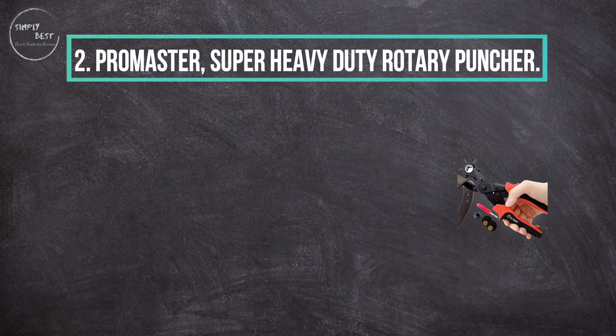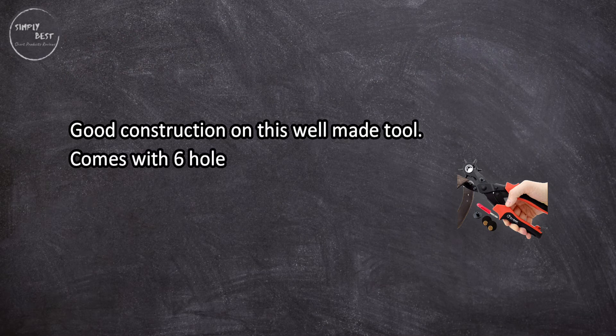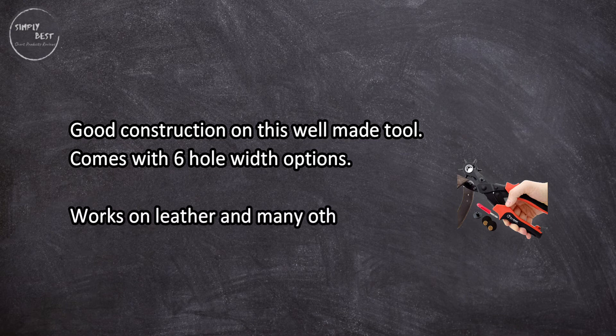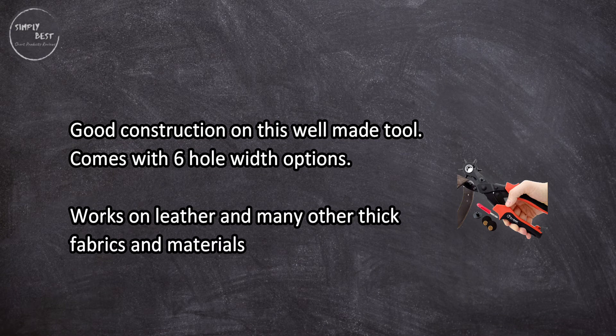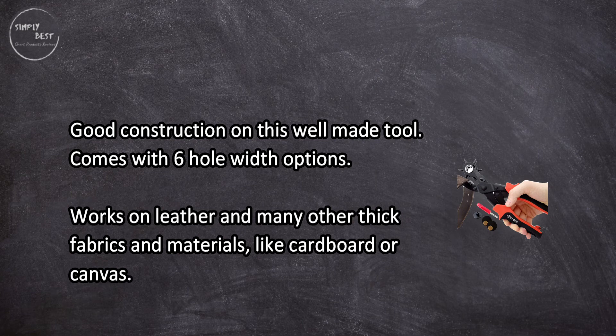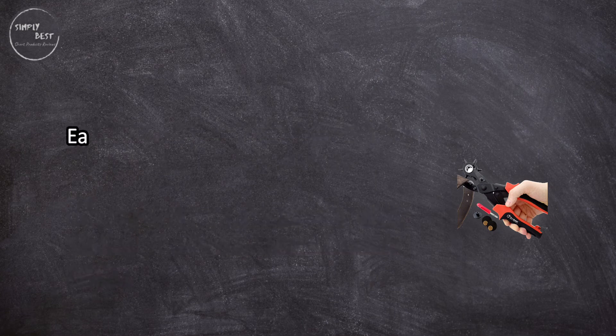At number two, Pro Master Super Heavy Duty Rotary Puncher. Good construction on this well-made tool, comes with six hole width options. Works on leather and many other thick fabrics and materials like cardboard or canvas. Easy to use, made to last.